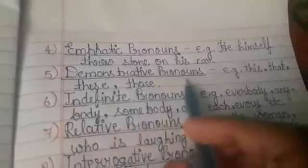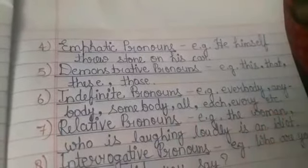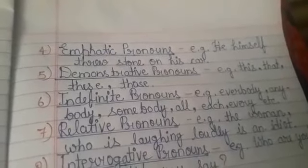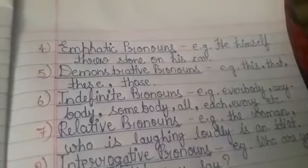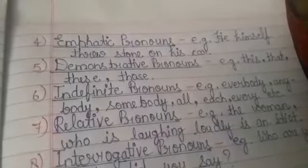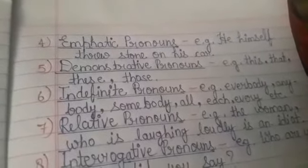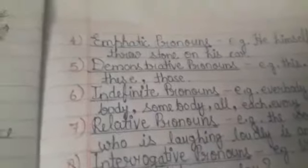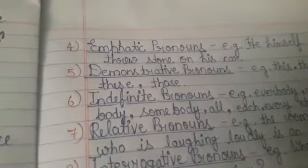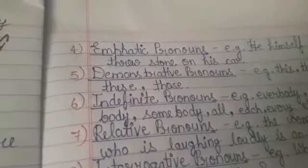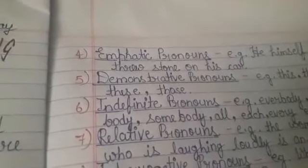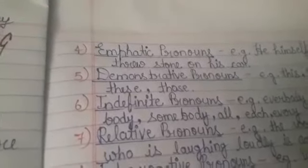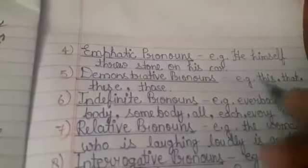Demonstrative pronouns. Examples: this, that, these, those. When a special person or a special thing is pointed out, we use demonstrative pronouns. For example: 'This is my coat. That is your pen.' These are our demonstrative pronouns.